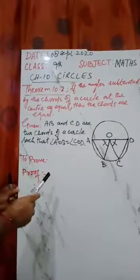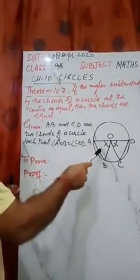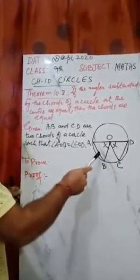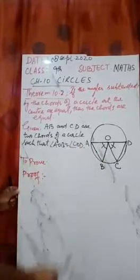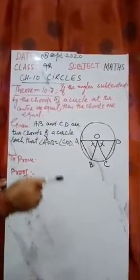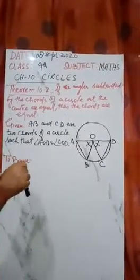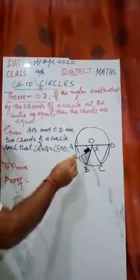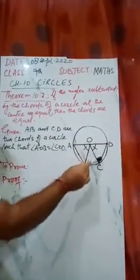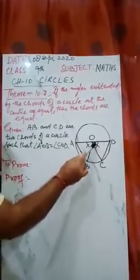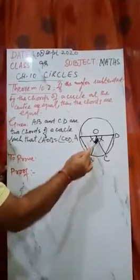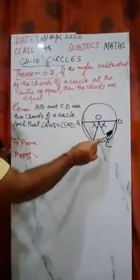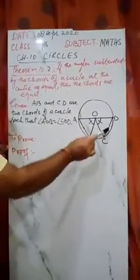In Theorem 10.1, it was given that two chords are equal and they subtend equal angles at the center. But in this theorem, the converse of 10.1, the angles subtended by the chords are given equal — that is, angles at the center are given equal — and now you have to prove that these two chords are equal.